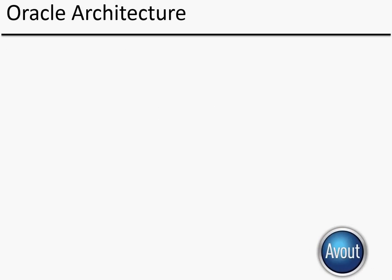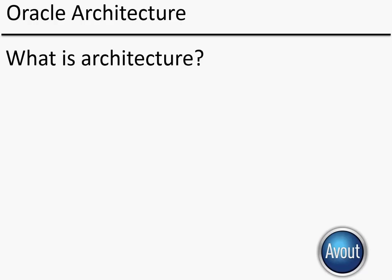So what are we going to talk about in this video? We're going to talk about what architecture is and specifically how it relates to Oracle products. One key thing DBAs need to understand is the difference between storing stuff in memory and storing stuff on disk. Oracle is optimized to use memory as much as possible, but we can't fit our whole database in memory, so we go to disk occasionally. Understanding how Oracle does that is essential to working as a DBA and making sure your database is tuned properly.